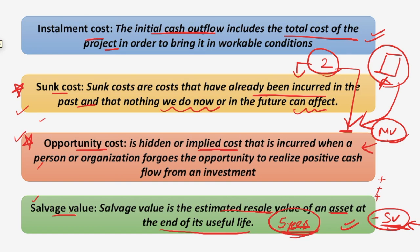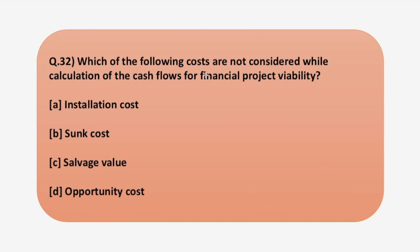So to answer the question: the cost not considered in the calculation of cash flows for financial project viability is the sunk cost, because sunk costs are never considered — they are always ignored. Moving on to the next question, I hope you have understood the concept of sunk costs and opportunity costs, as these are the only costs in which students usually get confused.